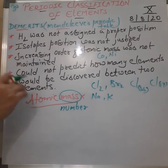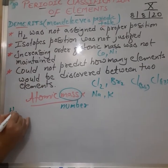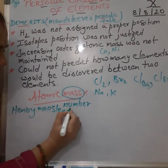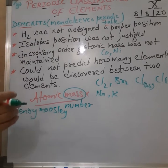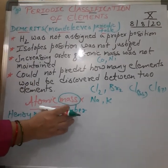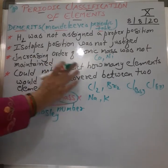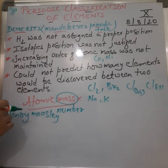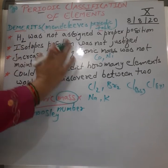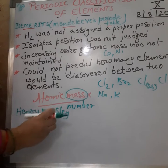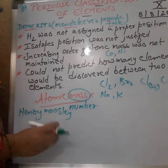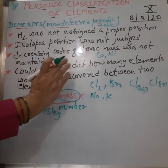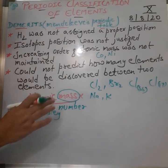Who proposed this? The first attempt was made by a scientist named Henry Moseley, who concluded that atomic number could be the most justifiable and satisfactory criteria for arrangement of elements in a periodic table. Without bringing much change to Mendeleev's periodic table, elements were arranged as per the atomic number, giving a very systematic arrangement.